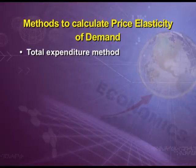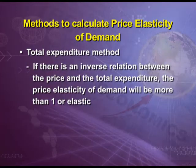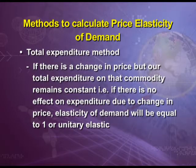The second method is the total expenditure method. There are three cases. First, if due to an increase in price total expenditure also increases — a direct relationship between price and expenditure — price elasticity of demand is less than one, or inelastic. Second, if there is an inverse relationship between price and total expenditure, price elasticity is greater than one, or elastic. Third, if there is a change in price but total expenditure remains constant — no effect on expenditure — elasticity of demand equals one, or unitary elastic.